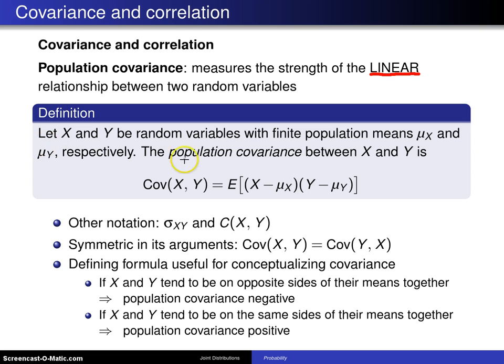So here is the definition of the population covariance. Let X and Y be random variables with finite population means μ_X and μ_Y, respectively. The population covariance between X and Y is Cov(X, Y) = E[(X - μ_X)(Y - μ_Y)].